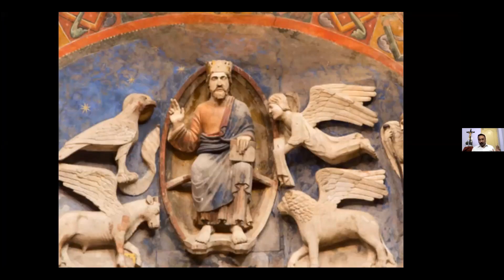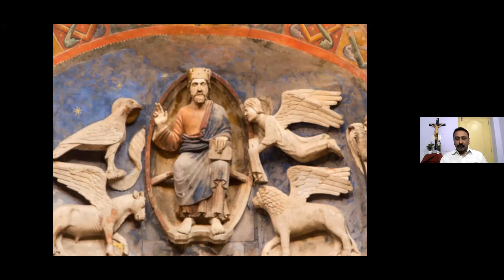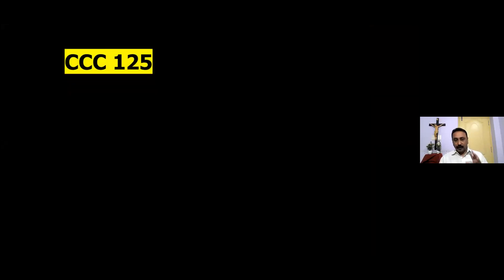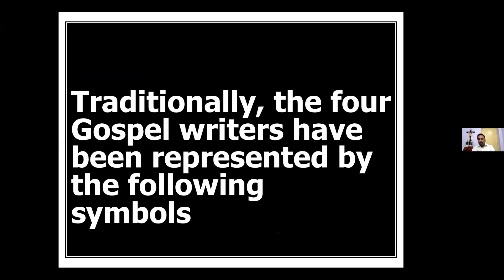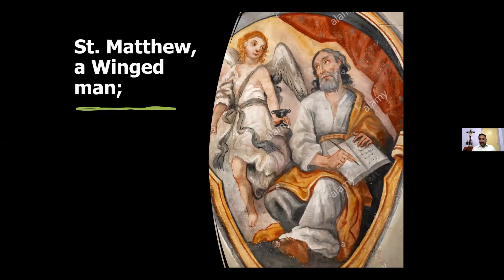Yesterday we began with the introduction to this gospel study, and we saw the importance of the gospels and the four signs each of the gospel writers had. Matthew is always with the winged man, symbolizing he was predominantly writing to the Jewish people.